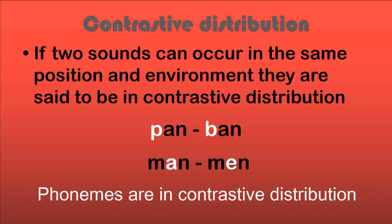There are two kinds of distributions: contrastive and complementary. Phonemes are always in contrastive distribution. If two sounds can occur in the same position and environment, they are said to be in contrastive distribution. For example, 'puh' and 'buh' can occur in the same environment, and when you change one for the other, there will be a difference in meaning. So phonemes are said to be in contrastive distribution.